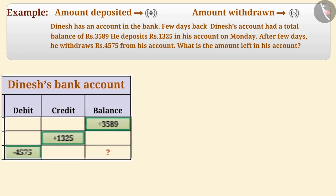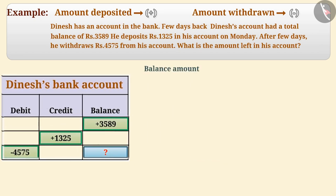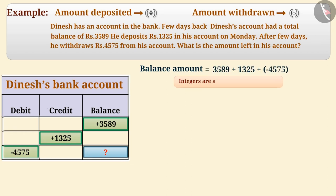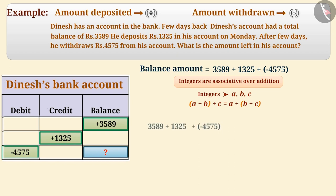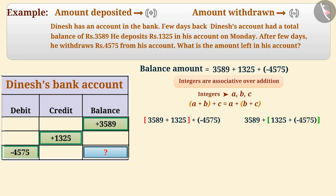To find the balance amount in his account, we need to add the three amounts. Since integers are associative over addition, we can group the numbers in any order to add them. Here, we can make a group of 3,589 and 1,325, or we can make a group of 1,325 and minus 4,575.